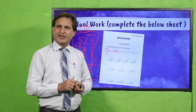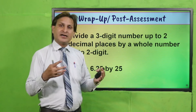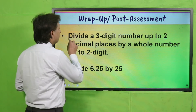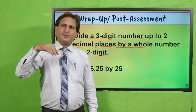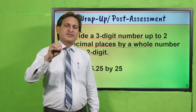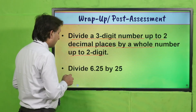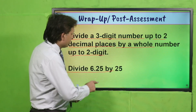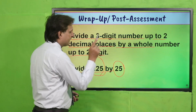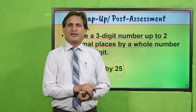Ab wrap up ki taraf. Aaj ke lesson mein humne kya seekha: hamaara SLO tha — divide a three-digit number up to two decimal places by a whole number up to two digits. Humne three-digit number up to two decimal places ko two-digit whole number se divide karna seekha. Ab quick check: aap logon ne 6.25 ko 25 se divide karna hai, notebook par, within one minute. Teacher ko show karwayein.